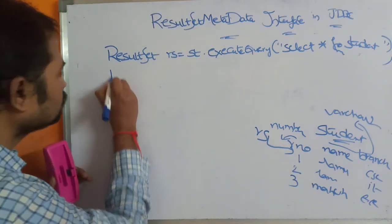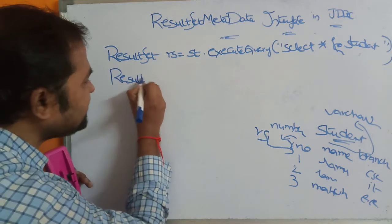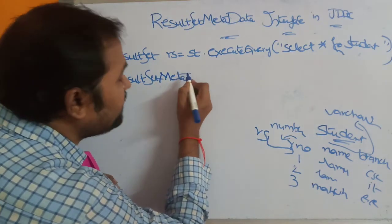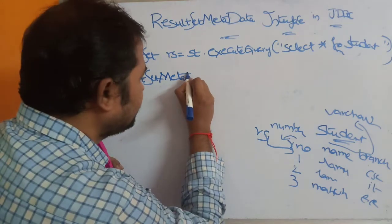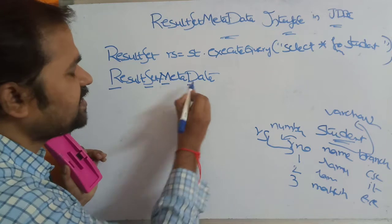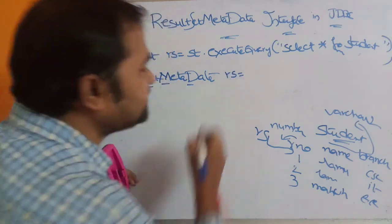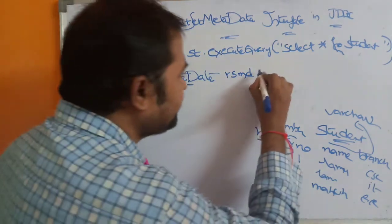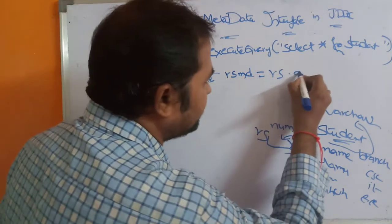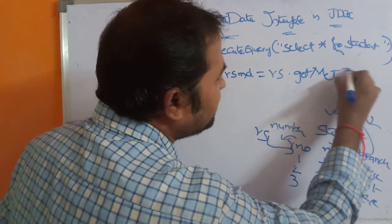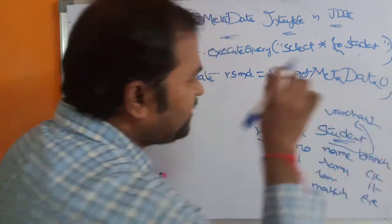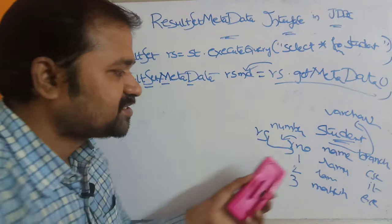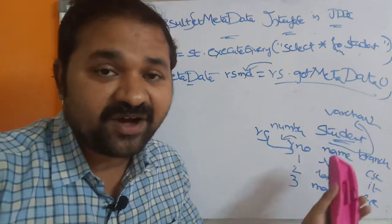In order to access the contents such as column names and number of columns, we call the getMetaData() method using the ResultSet object. We write: ResultSetMetaData RSMD = RS.getMetaData(). Here R, S, M, and D are uppercase letters in ResultSetMetaData. The getMetaData() method retrieves the entire information about the table, and that information is stored in the RSMD object. So RSMD contains the entire information regarding the table.